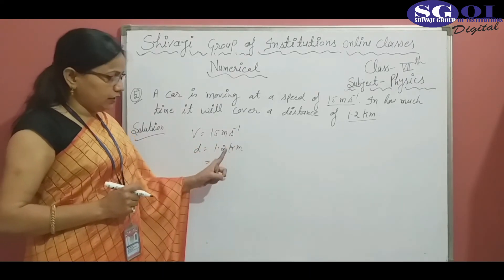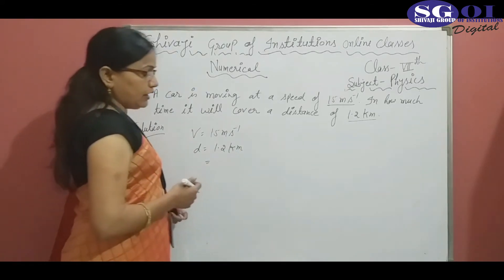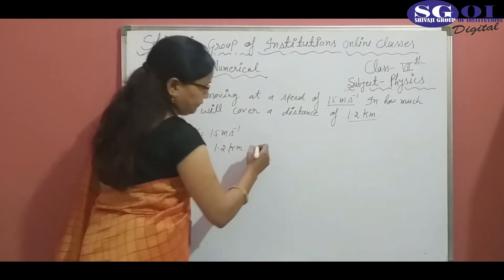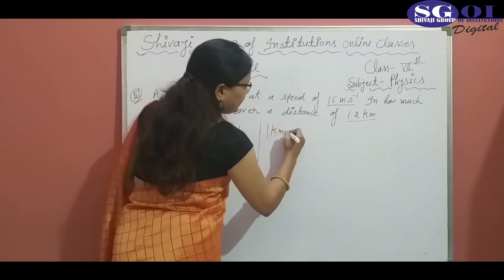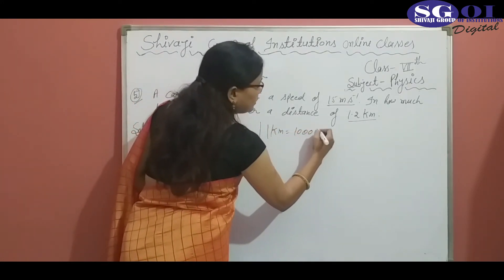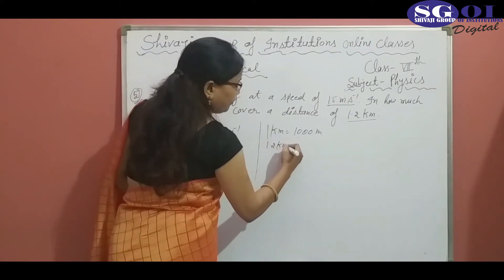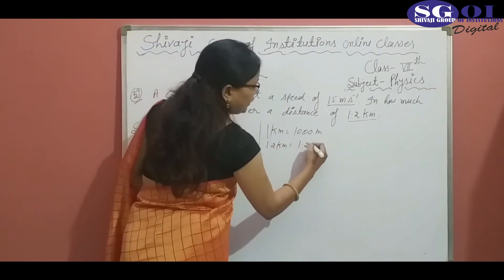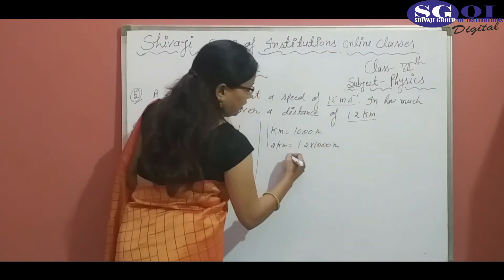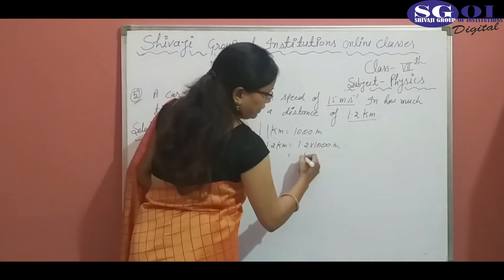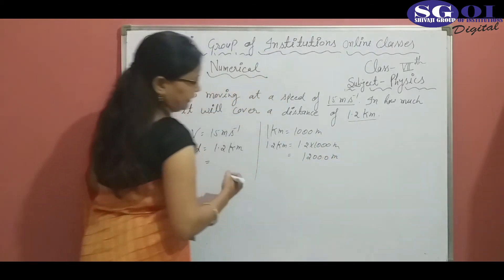So, we will convert kilometer into meter. As we know that 1 kilometer equals 1000 meter. So 1.2 kilometer equals 1.2 into 1000 meter. After multiplying, we get 1200 meter.